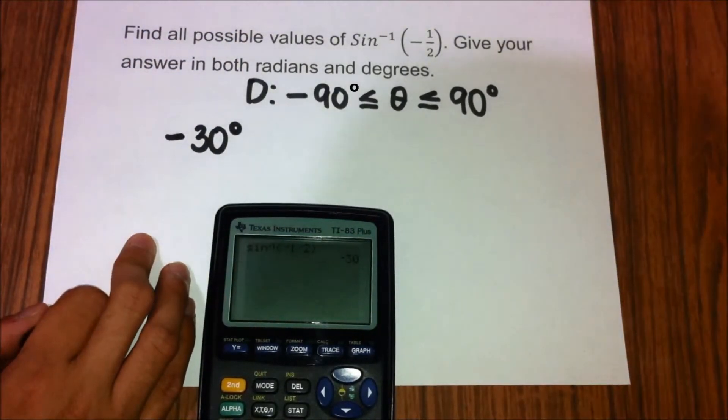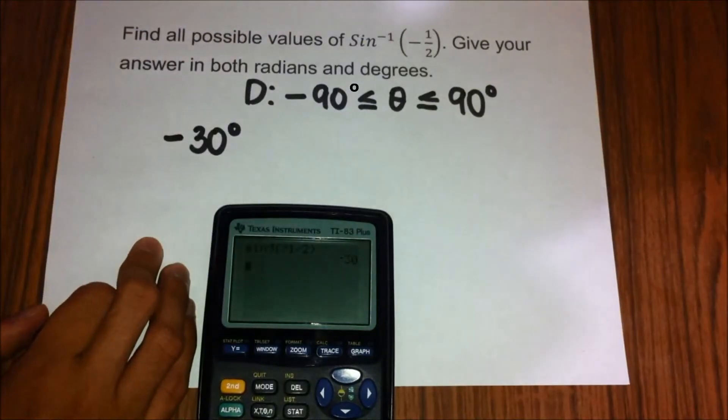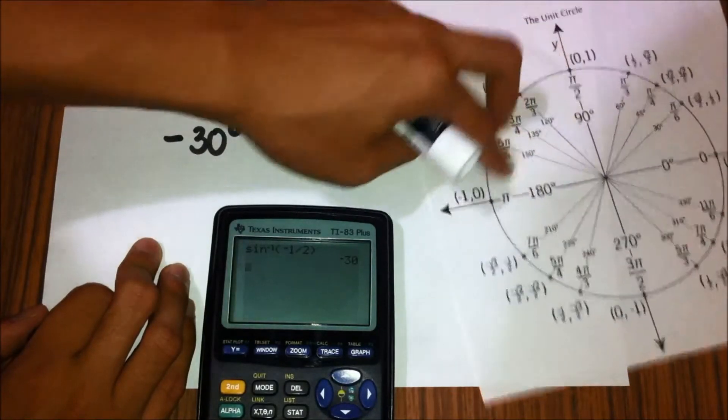Now to find the radian value, we can simply look at the radian value of positive 30 degrees, which is pi over 6, and we can see here on the unit circle